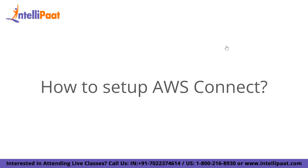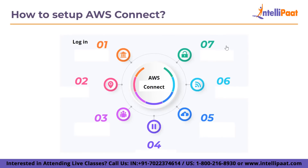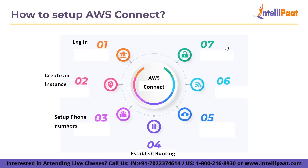Now we will see how to set up the AWS Connect instance. The first step is to log into the Amazon Connect console from your AWS account. After this, you will have to create an instance where all the information related to the contact center will be stored. The next step is to set up phone numbers — you are required to claim a phone number for voice supported centers; you can either use your own number or AWS will provide you with one. The next step is to establish routing by finding the appropriate operation queues and indicating whether agents must use voice, chat, or task when creating routing profiles. The fifth step is to create a contact flow, which establishes the entire customer experience journey from beginning to end. One contact flow can be used for tasks, voice, and chat.